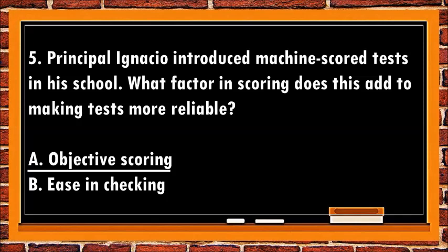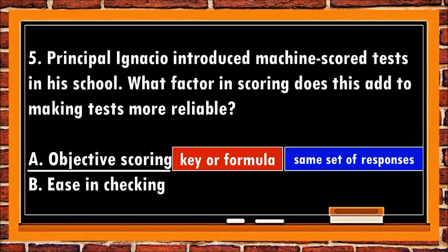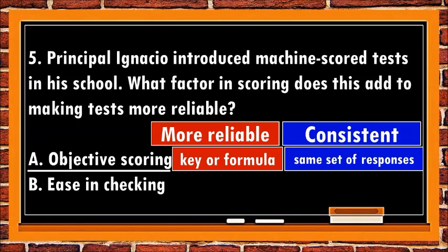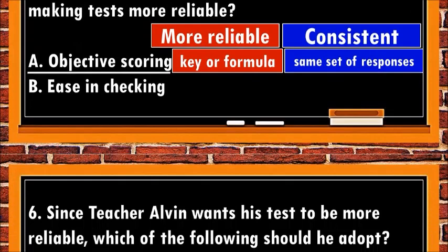The best answer is a. Objective scoring. The use of a test scoring machine is one form of objective scoring — it scores a test utilizing a key or formula. Through this, different scorers will arrive at the same score for the same set of responses. A test is reliable if it measures the same thing consistently and reproducibly. Thus, objective scoring makes the tests more reliable.